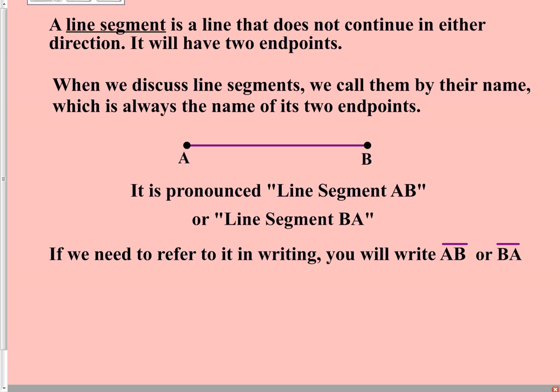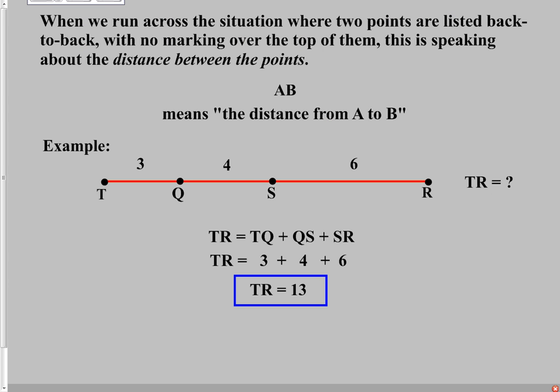A line segment is a line that does not continue infinitely in either direction — it has two endpoints. When naming a line segment, you list the two endpoints, and there's a little line symbol over the top with no arrows. The ray also has a symbol: the endpoint goes above the first letter and the arrow goes to the right, since you always list the endpoint first. If you have two points listed back to back with no symbol over the top, the problem is referring to a distance — a length between the two points.